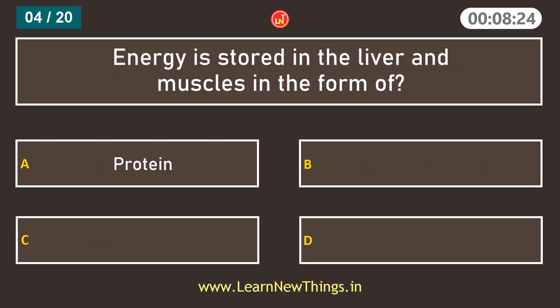Energy is stored in the liver and muscles in the form of Glycogen.